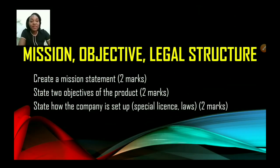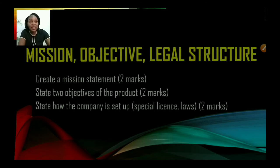Now let us look at the mission, objective, and legal structure. This part is worth six marks. You should create a mission statement, which is two marks. State two objectives of the product, which is another two marks. State how the company is set up — which has to do with special licensing and laws — and that is also another two marks.